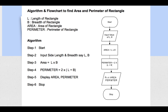In the corresponding flowchart, you have the start and stop symbols at the beginning and end. You have the input/output symbol for input values L and B. Then you have two processing symbols: area equals L times B, and perimeter equals 2 times (L plus B). Finally, you print the area and the perimeter.